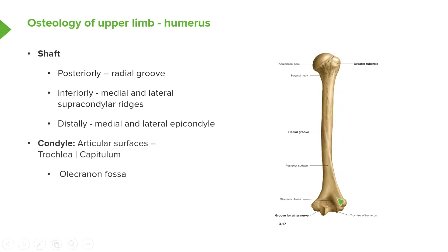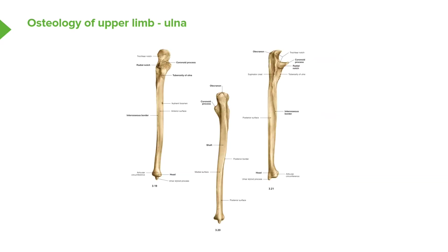If we look at the posterior surface of the distal humerus, we can see the olecranon fossa. This is an important shallow depression for the olecranon, which is a bony structure on the ulna, and we'll look at that next as we look at the ulna.